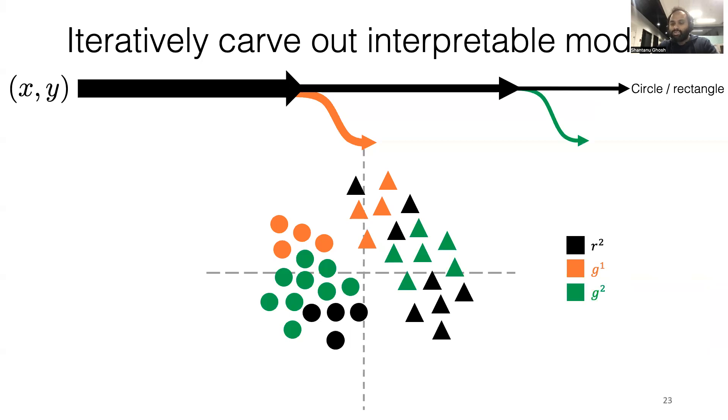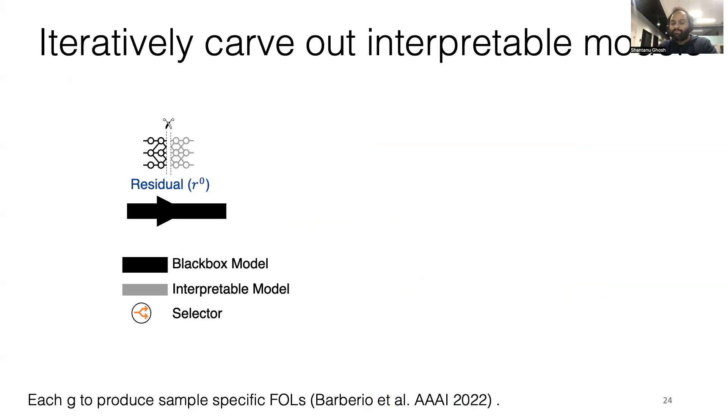Similarly, the interpretable model G2 is going to cover the green samples. The residual R2 will cover the remaining black samples. Here is the flow of our entire method.